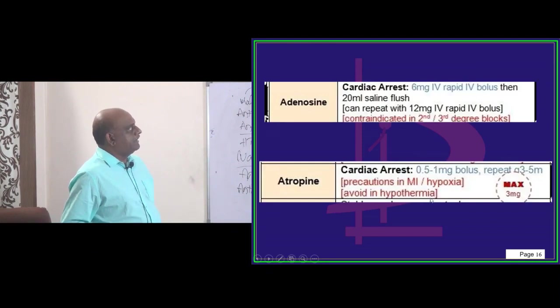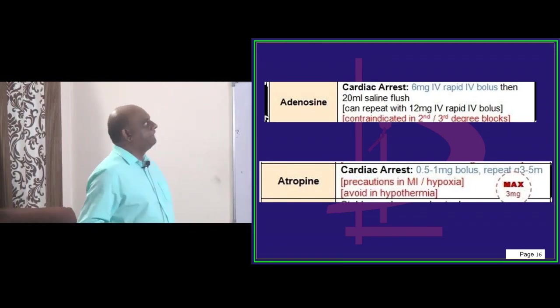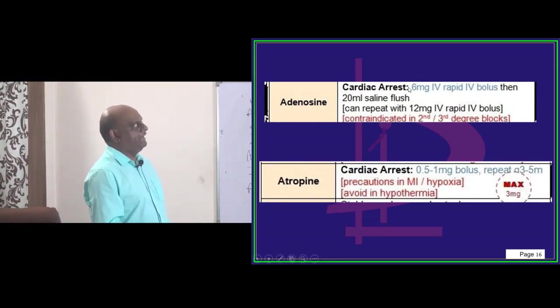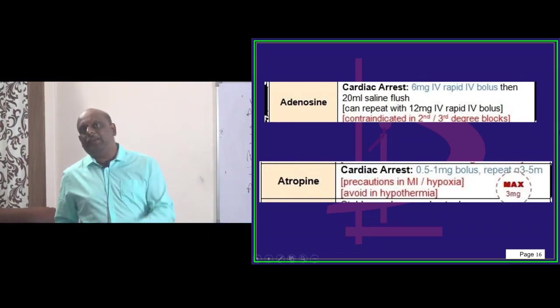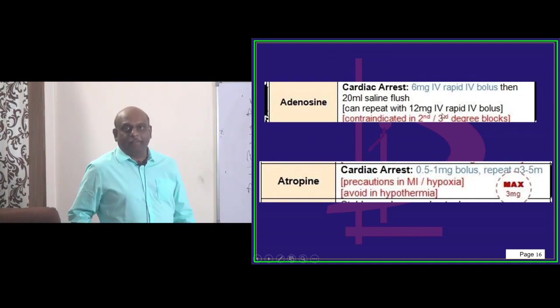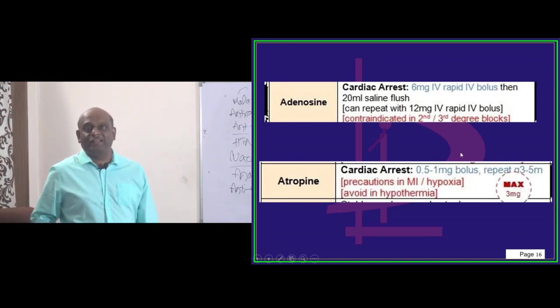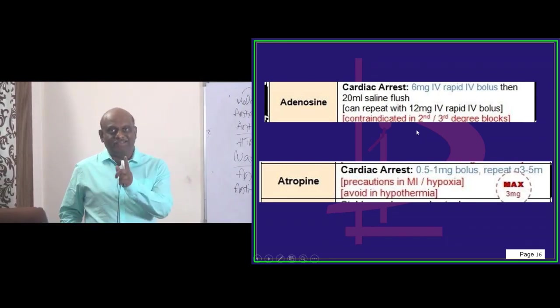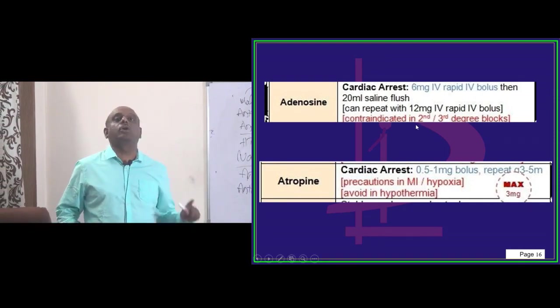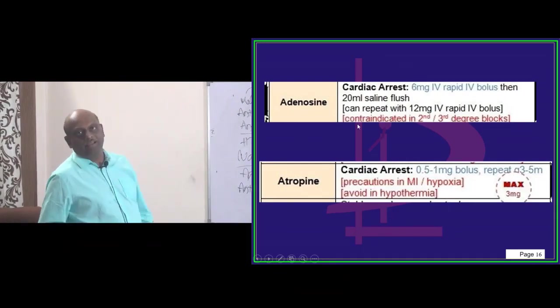Next is adenosine. When will you give adenosine in the ACLS? Whenever there is a cardiac arrest, 6 milligram IV push rapidly intravenous bolus, then 20 ml saline flush is what you will be giving. And you can repeat 12 milligram IV rapid IV bolus, you need to look at the monitor and then check whether there is a revival or not. But if there is a second degree heart block or third degree heart block, don't give adenosine. It is a strict contraindication.